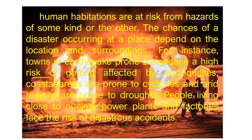All human habitations are at risk from hazards of some kind or the other. The chances of a disaster occurring at a place depend on the location and surroundings. Towns and cities in an earthquake-prone zone face a high risk of earthquakes. Coastal areas are prone to cyclones, and arid regions are likely to be affected by droughts. People living close to a nuclear power plant or other factories are likely to face the risk of disastrous accidents.